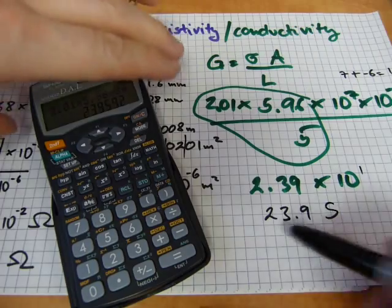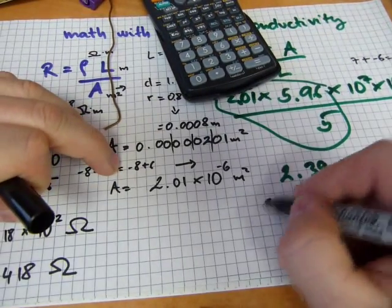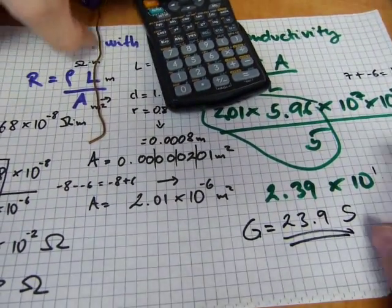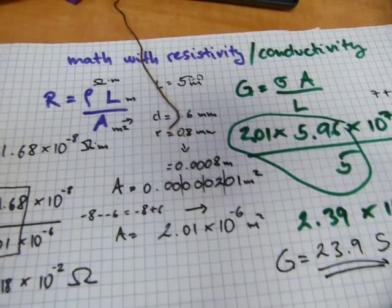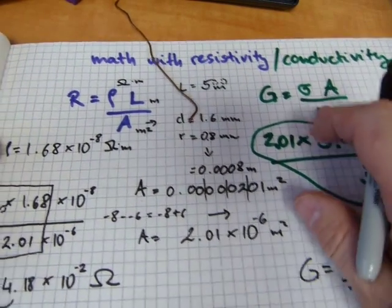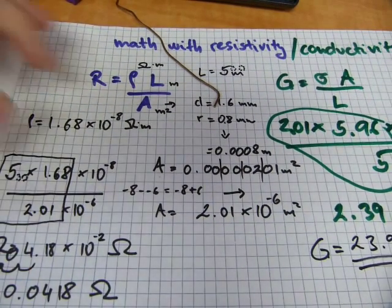At the end of the calculation, that's the final answer for the G number for conductivity, and for resistance it was this ohm number.